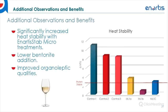Some additional observations and benefits: with the final sampling, we submitted the wines for heat stability testing to see the effect Stab Micro had on wine protein stability. Compared to the control, the Stab Micro treatment wines were significantly more stable. This corresponds to lower bentonite additions, which helps preserve the organoleptic characteristics of white wines and is really in line with sustainable winemaking practices.